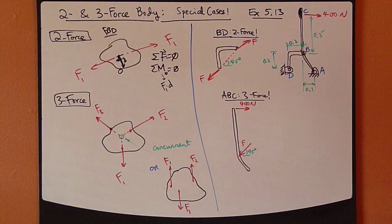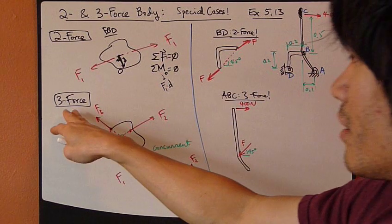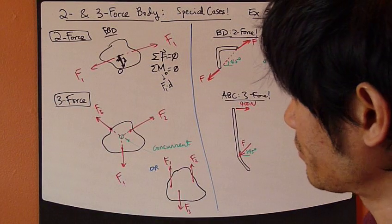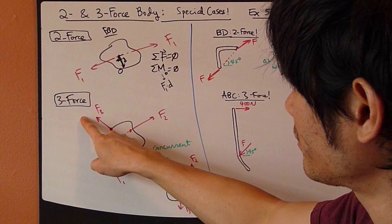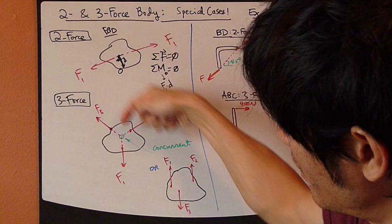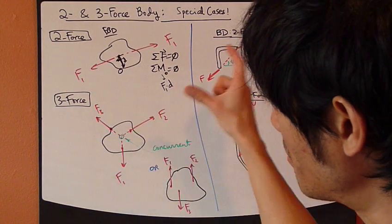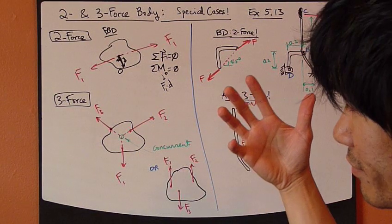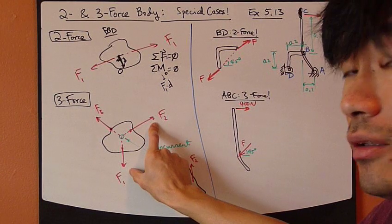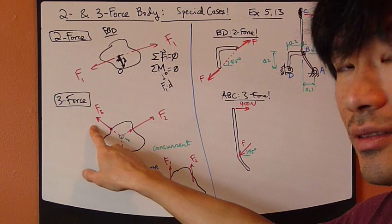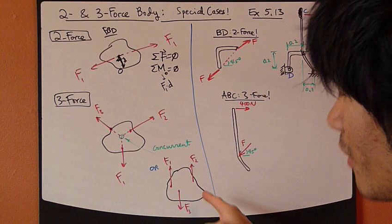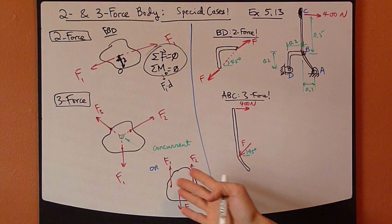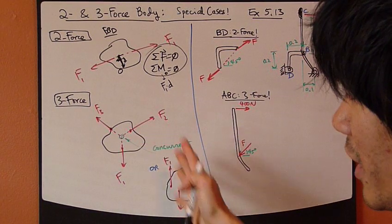They have to be along the same line of action. If the body is subjected to three forces, there are two possibilities. The first is that F1, F2, and F3 must be concurrent — meaning the lines of action of these three forces must all meet at the same point. Or, if two of them are parallel, then the third must also be parallel to the other two. These are the only ways where the equilibrium equations are satisfied for a rigid body under three forces.